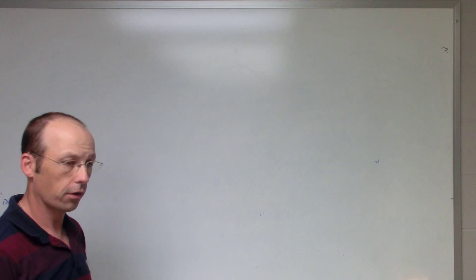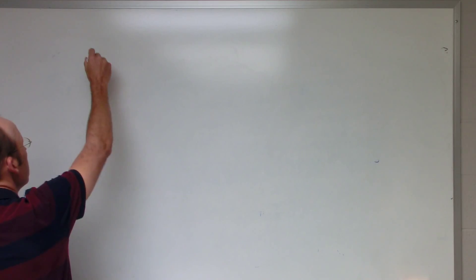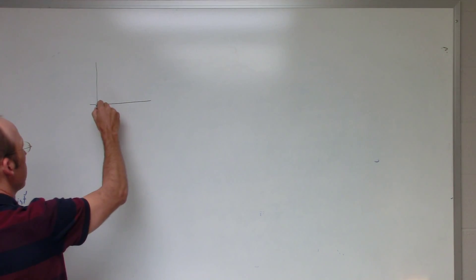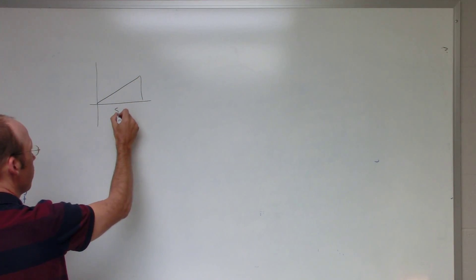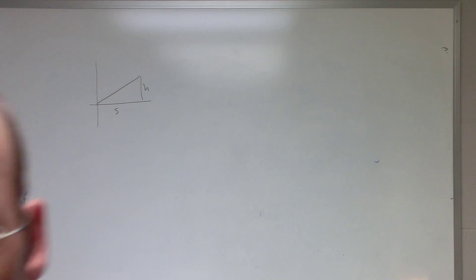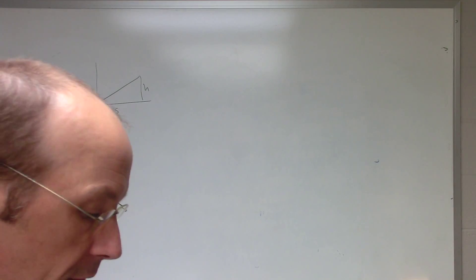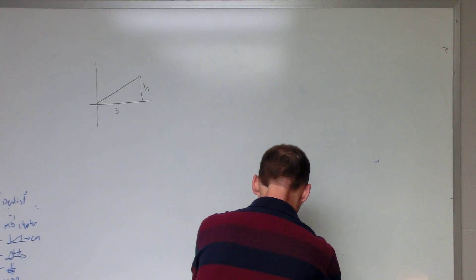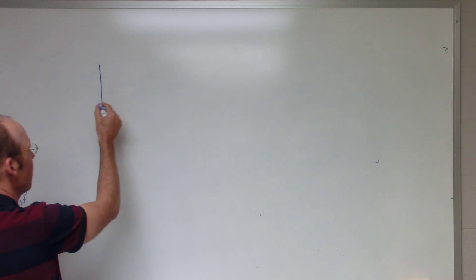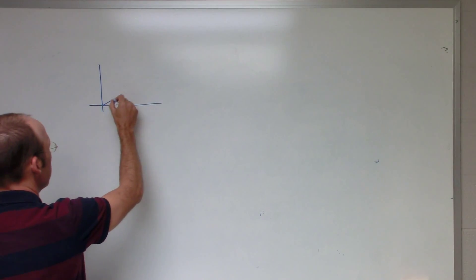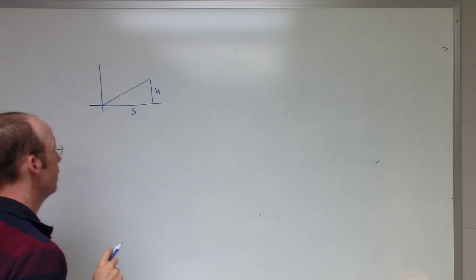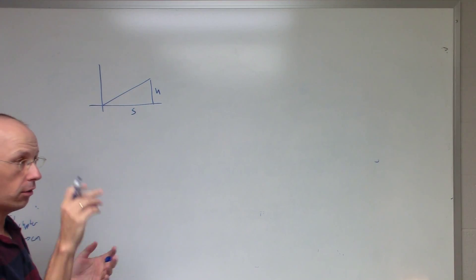For fun, we're going to do another center of mass problem. Here's a right triangle where this distance is s and that's h — so it's an s by h triangle. It's a two-dimensional triangle.